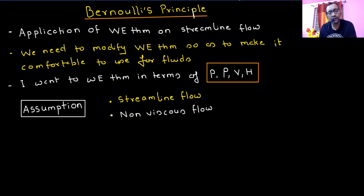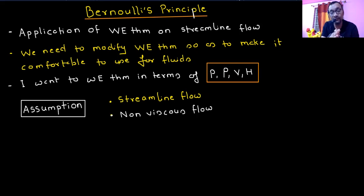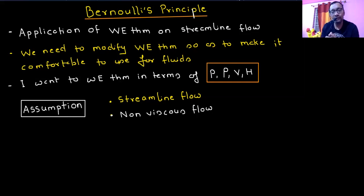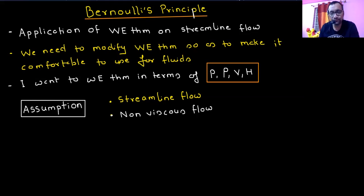Viscosity is like friction between layers of fluid. When one layer moves relative to another, there is a chance that some mechanical energy gets converted into heat, causing energy loss. You can't account for thermal losses in the work-energy theorem as we know it. So you need to make sure it is a non-viscous flow, or at least that no frictional losses are present.